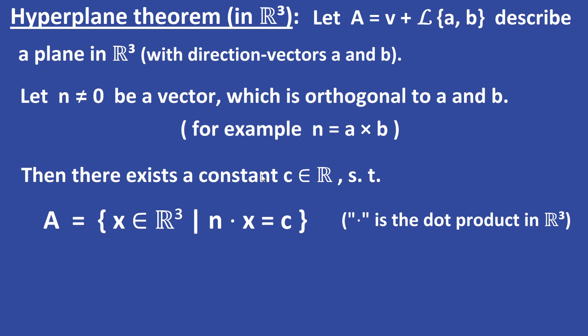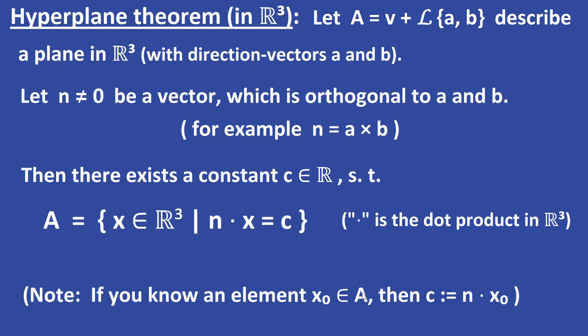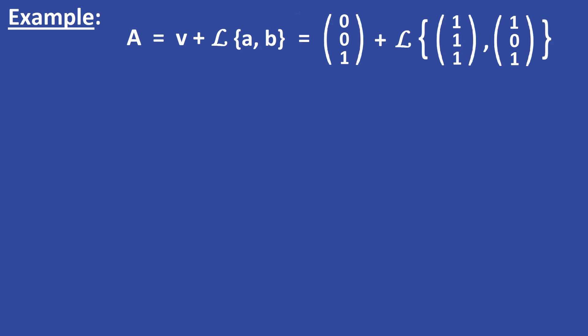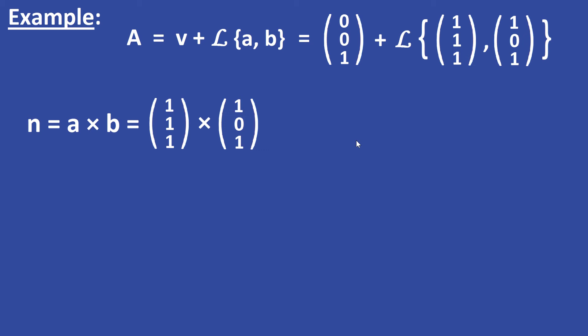That dot denotes the dot product in R3. If you have a given element X0 of your plane A, then C equals N dot X0. Let's try this out. Let A be the plane with direction vectors (1, 1, 1) and (1, 0, 1), and translation vector (0, 0, 1). We take the cross product of the direction vectors: N equals A cross B equals (1, 1, 1) cross (1, 0, 1), which gives the vector (1, 0, -1).